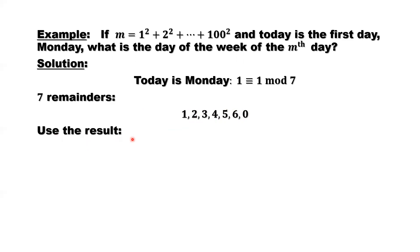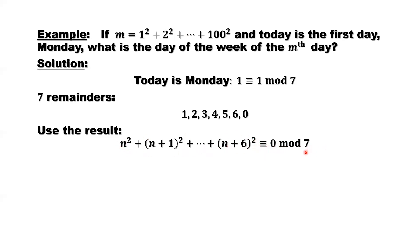We use the result: the sum of seven consecutive number squares has a remainder of zero when divided by seven. We have a total of 100 terms in this sum. We can cut them into groups, each group with seven consecutive number square terms. The remainder for all of those groups is zero. The question is: from those 100 items, how many groups of seven are there? 100 divided by seven gives 14 groups of seven consecutive numbers, plus two more.